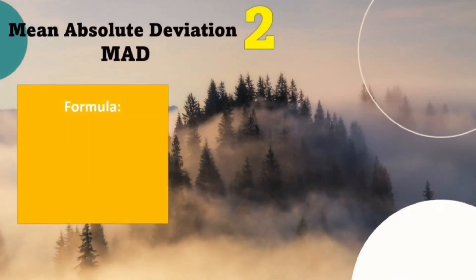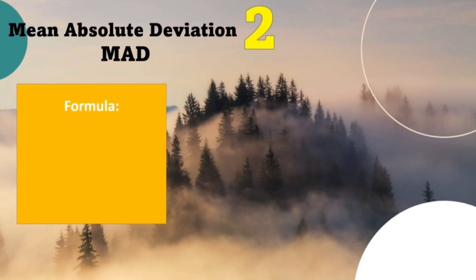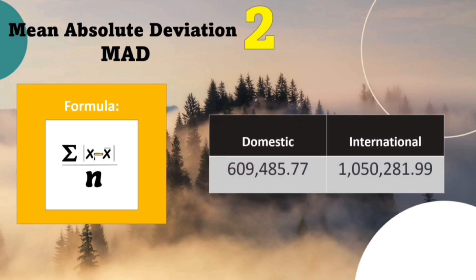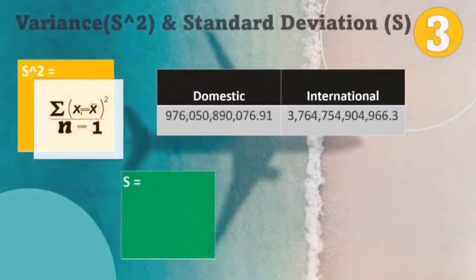The next measurement is mean absolute deviations. The formula to calculate MAD is the sum of the observations minus the mean sample, divided by the sample size, and the answer must be positive. Our group found that domestic is the lowest in mean absolute deviations at 609,485.77 passenger traffic, and international was the highest at 1,080,281.99 passenger traffic.